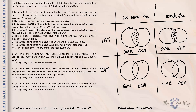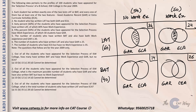60 people wrote LAT and 40 wrote BAT. Of the 60 LAT writers, 40 percent have work experience, giving 24 people with LAT and work experience, and the remaining 36 with LAT and no work experience. The fourth point states 50 percent of all students have work experience, so 50 have work experience and 50 do not. Of the 50 with no work experience, 36 wrote LAT, so 14 wrote BAT. Of the 50 with work experience, 24 wrote LAT, so 26 wrote BAT.